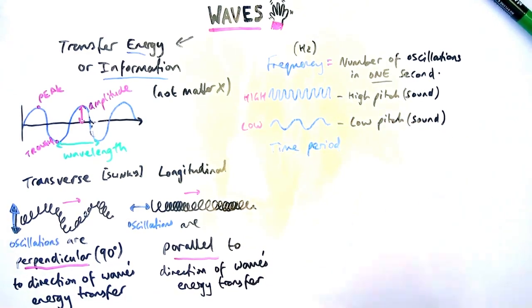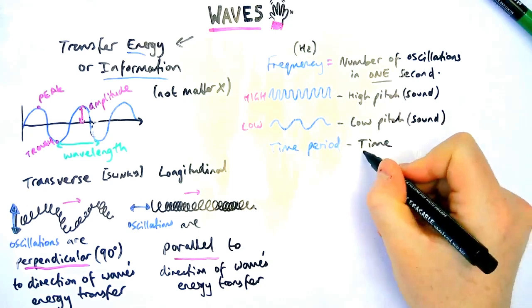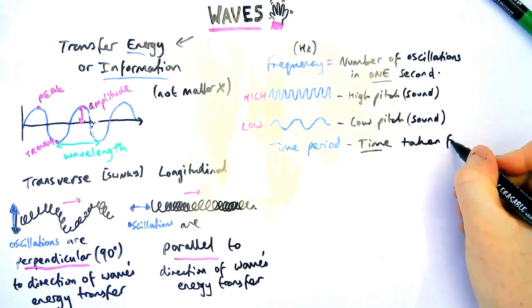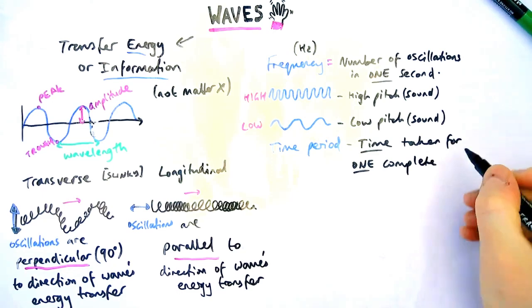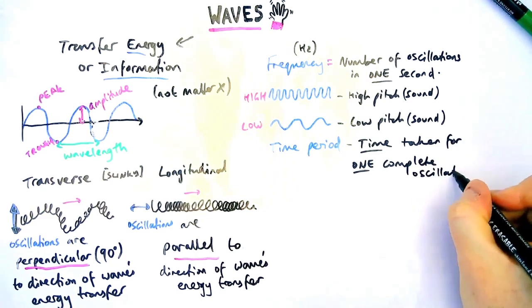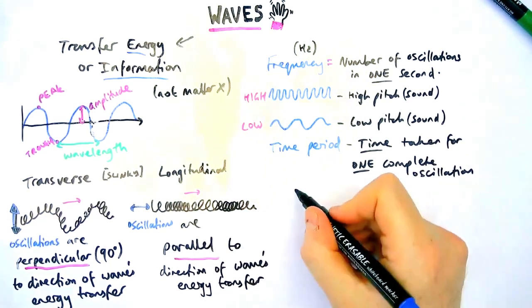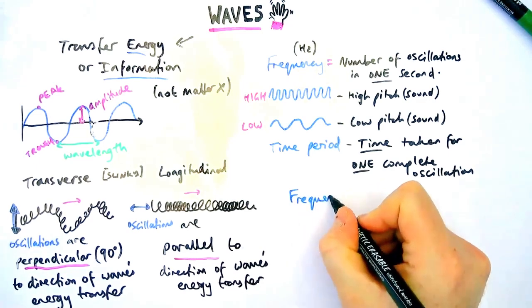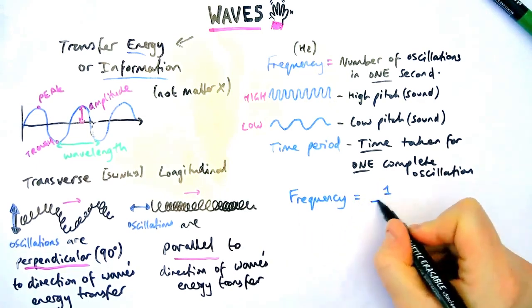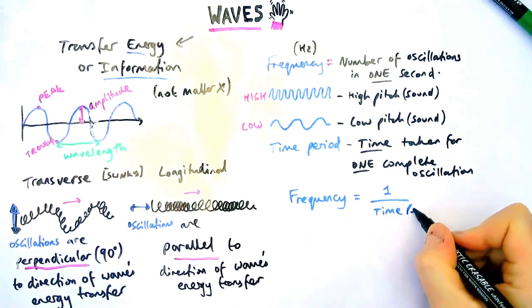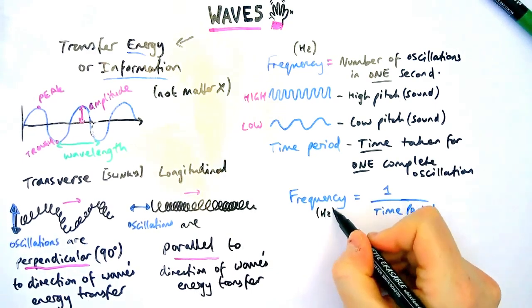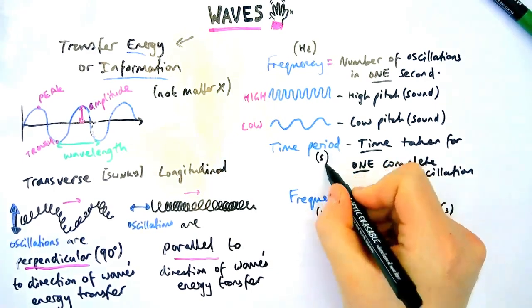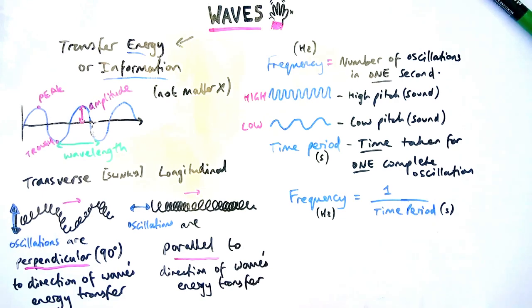Time period is the last definition we're going to look at today, which is the time taken for one complete oscillation of a wave. A very similar idea to wavelength, although wavelength is the length of the wave, time period is the time taken for one full oscillation. Now, frequency can be calculated if you know the time period by doing one divided by the time period and vice versa. I forgot to mention time period is in seconds, S.